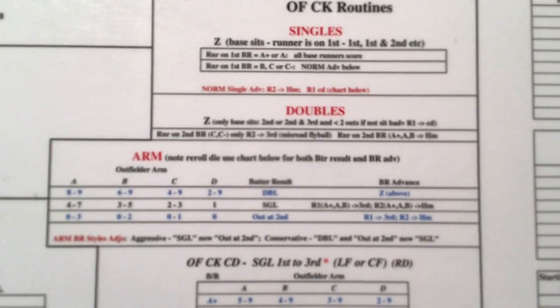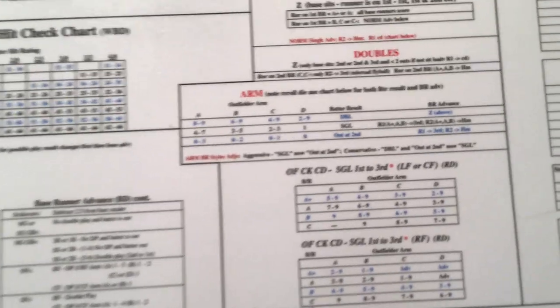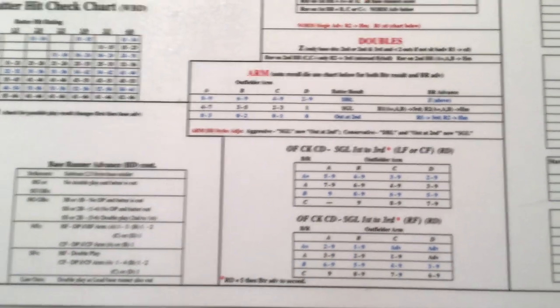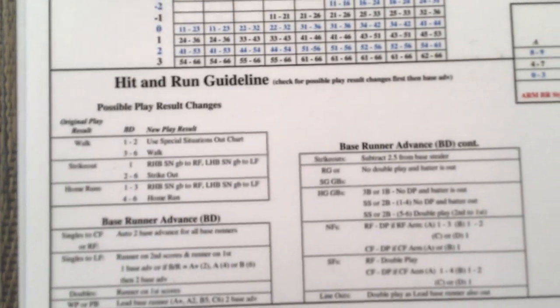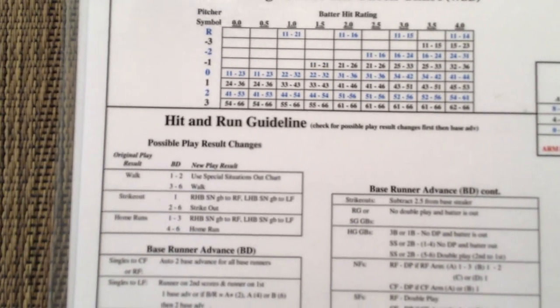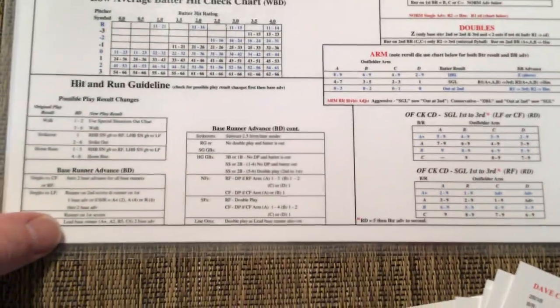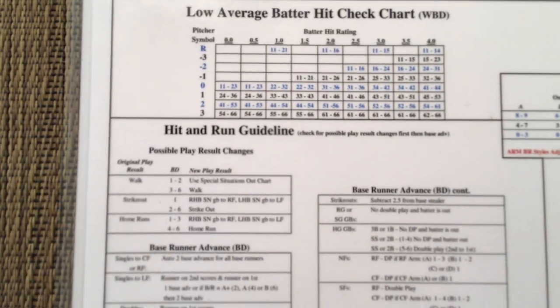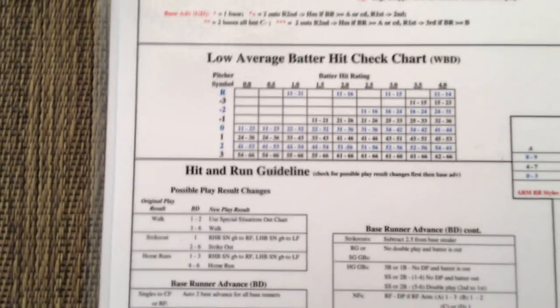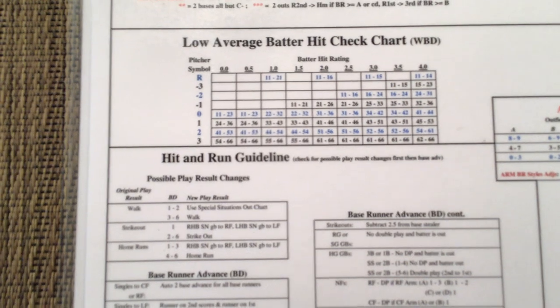There's an arm check chart and a first-to-third manager's decision chart. There's also a hit and run chart: if you call a hit and run, certain play results can be changed and base runner advances are affected. It prevents double plays but gives a possible strikeout or thrown-out situation. It reduces the chance of a home run — knocking it down to a single since the batter was concentrating on hit-and-run and not looking to drive the ball out — while also decreasing strikeouts and walks. Off to the right is the quick weather guide.